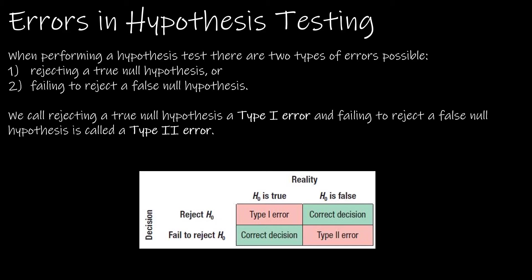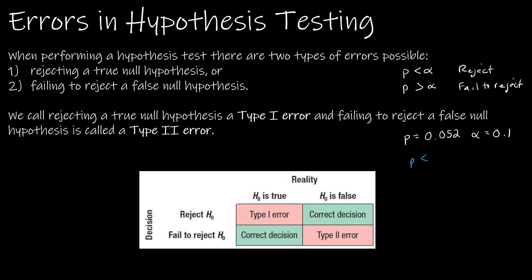We know that when we perform a hypothesis test, we have two possible conclusions: we either reject the null or fail to reject the null. Let's say I performed a hypothesis test and I got a p-value of 0.052 and I was using alpha as 0.1. Now we know that if p is less than alpha, then we are supposed to reject the null. And if p is greater than alpha, we are supposed to fail to reject the null. So based on that, this p-value is less than alpha, and therefore I should reject the null.